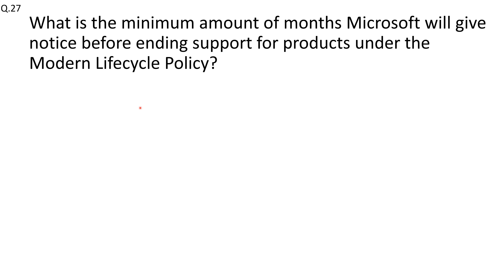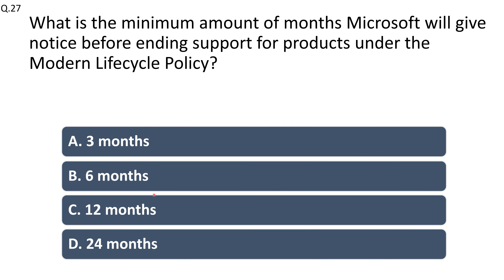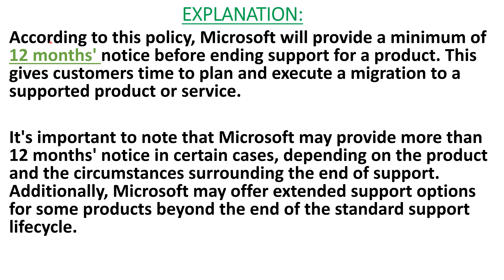Question number twenty-seven: what is the minimum number of months Microsoft will give notice before ending support for products under the Modern Lifecycle Policy? Options: 3, 6, 12, or 24 months. The right answer is 12 months. Microsoft will provide a minimum of 12 months' notice before ending support for an online product, giving customers time to plan and execute migration. Microsoft may provide more notice in certain cases and may offer extended support options beyond the standard lifecycle.